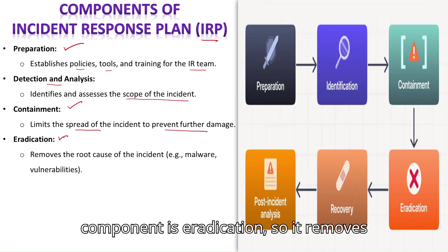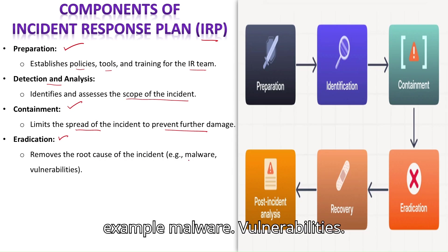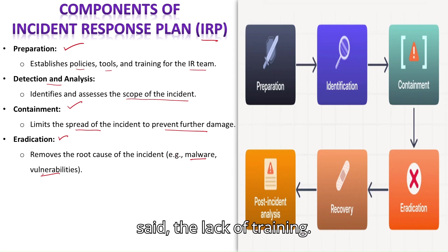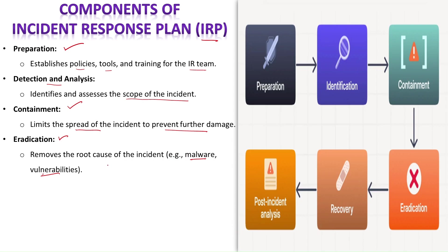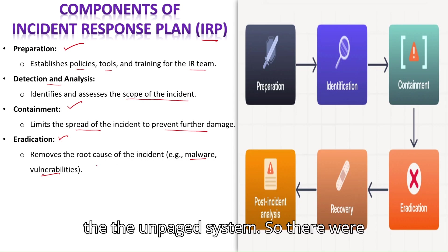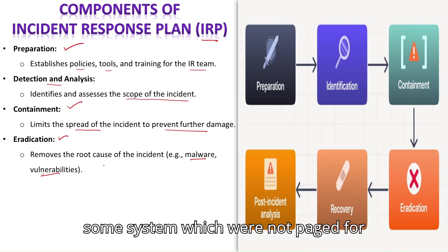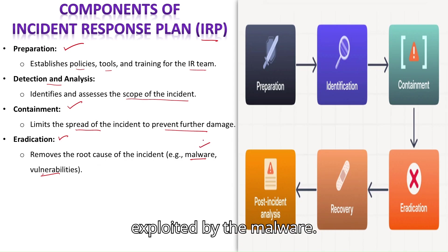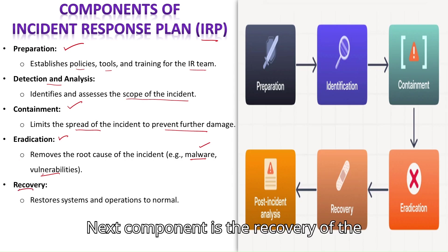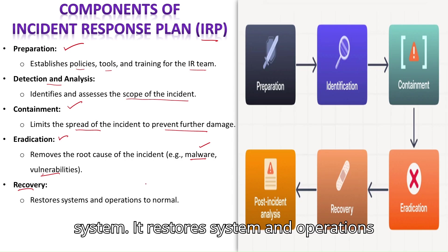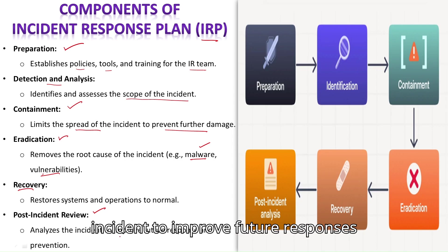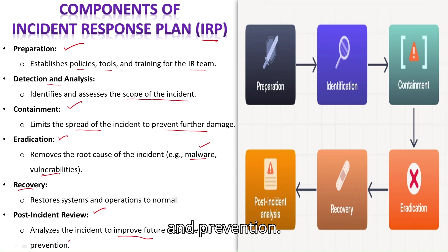Eradication removes the root cause of the incident — for example, malware vulnerabilities such as lack of training or unpatched systems that had security vulnerabilities exploited by the malware. Recovery restores systems and operations to normal. The last component is the Post-Incident Review, which analyzes the incident to improve future responses and prevention.